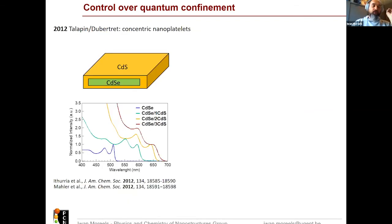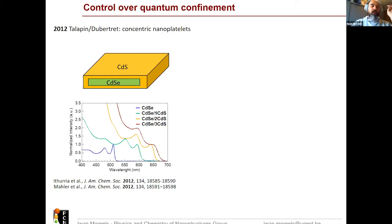With these 2D nanoparticles, you can also make core-shell nanoparticles, just as with cadmium sulfide rods. In 2012, the groups of Tellapine and Dubertret more or less simultaneously showed that you can coat cadmium selenide with a cadmium sulfide shell. By coating it with a CdS shell, you create a so-called quasi-type 2 structure, which leads to a strong redshift of the absorption and also the fluorescence properties.